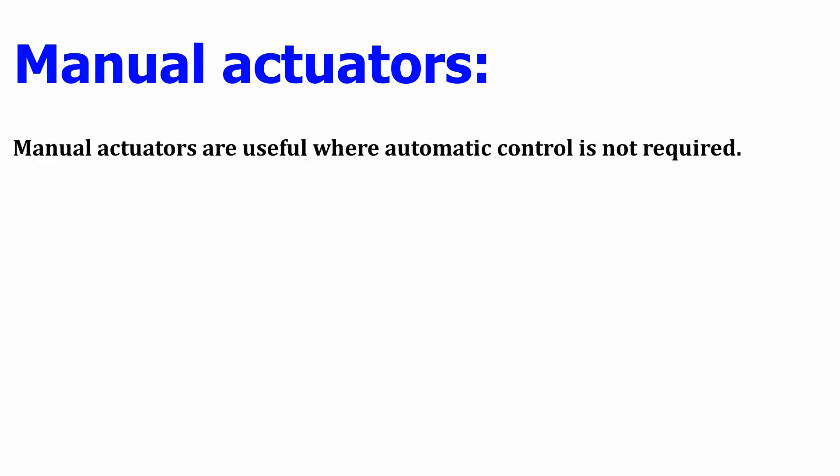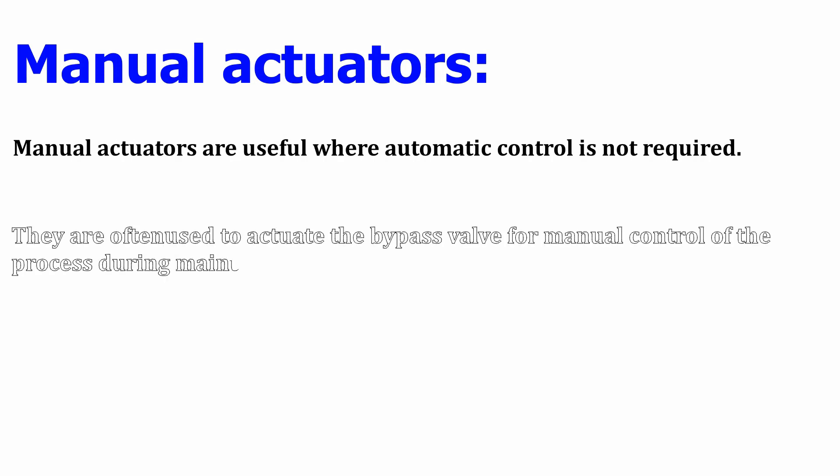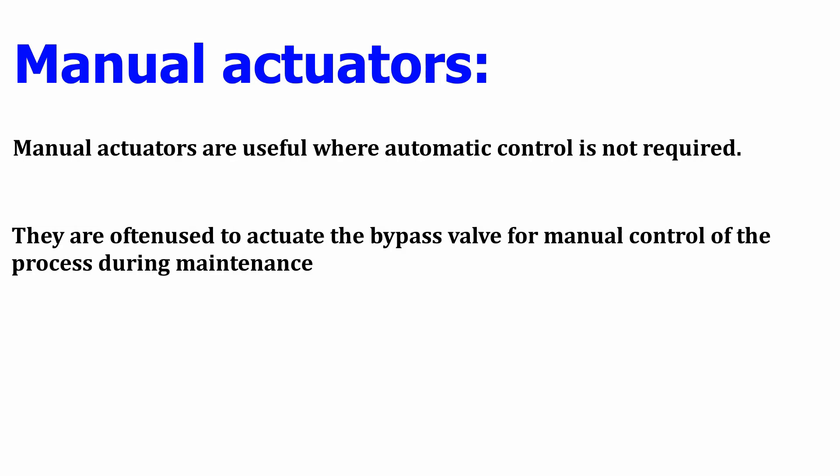Finally, we come to manual actuators. These are used in non-critical loops where no automatic controller or system needs to be implemented. Manual actuators do not require any pneumatic, hydraulic, or electric power source. They are commonly used in bypass lines, and those bypass valves are operated only during shutdown or maintenance activities. Hope you got a good understanding of control valve actuators, their types, and applications. If you liked this video, give it a thumbs up and share it with the instrumentation community.